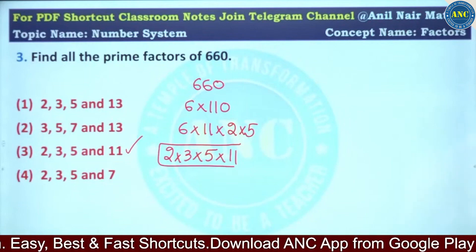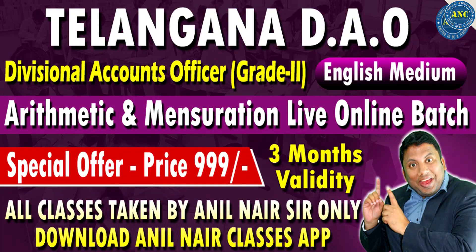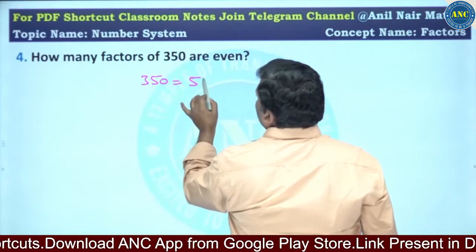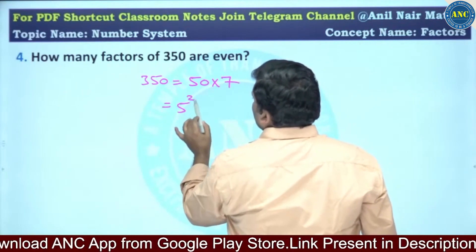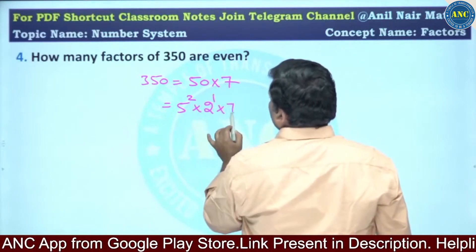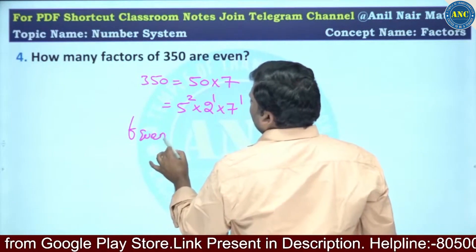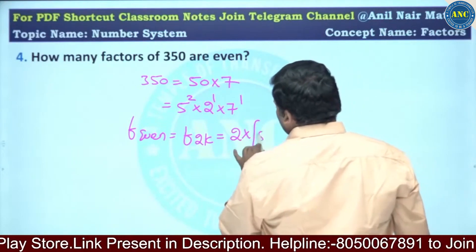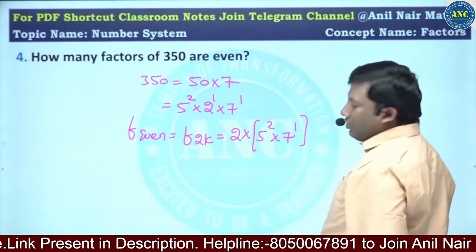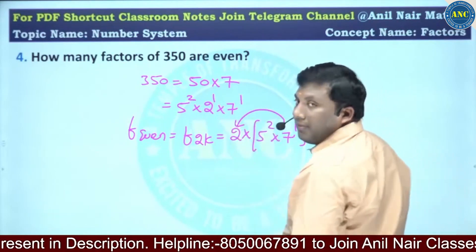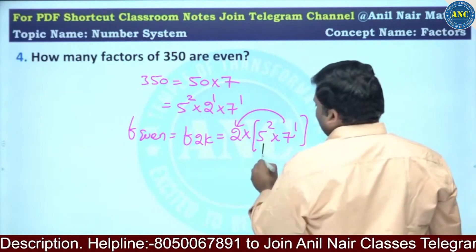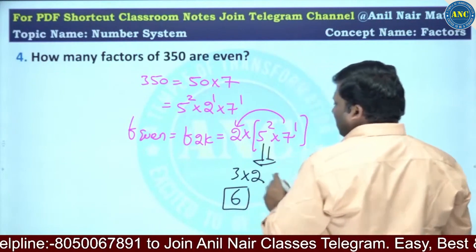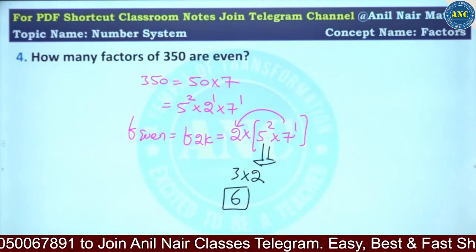Third question: how many factors of 350 are even? 350 is a composite number: 50 into 7, and 50 is 5 squared into 2. So 350 = 2 × 5² × 7. Any even factor is divisible by 2, so we take 2 multiplied by remaining factors of 5² × 7¹. The number of such factors is (2+1) × (1+1) = 6.